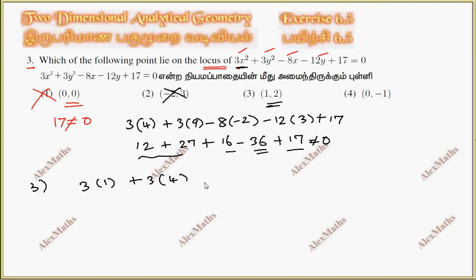equals 3 plus 12, minus 8 into 1, minus 12 into 2, plus 17. That gives 3 + 12 - 8 - 24 + 17, which is 32 minus 32 equals 0.